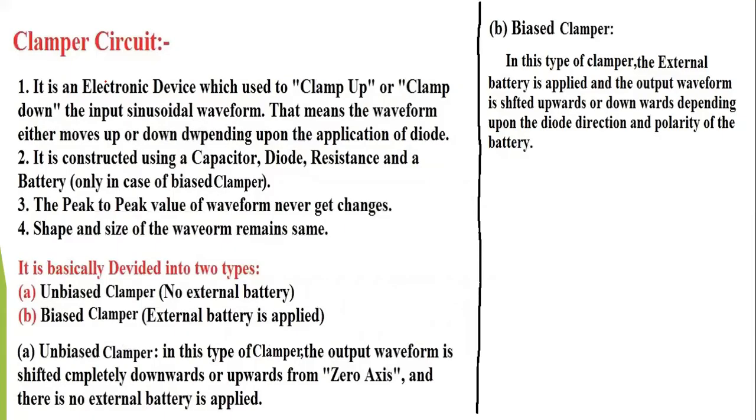In easy terms, the clamper circuit is used to clamp up or clamp down the input sinusoidal waveforms. The waveform either moves up or down depending upon the diode application and placement. This network must have a capacitor, diode, and resistive element. It can also include an independent DC supply to introduce an additional shift or DC level.